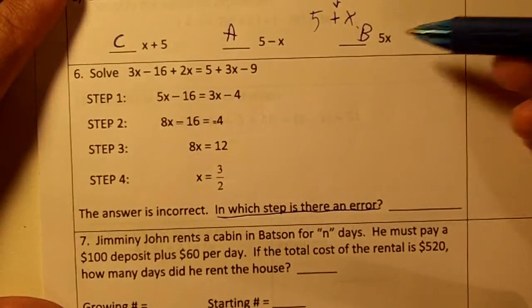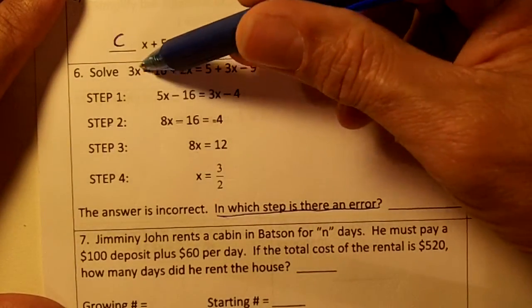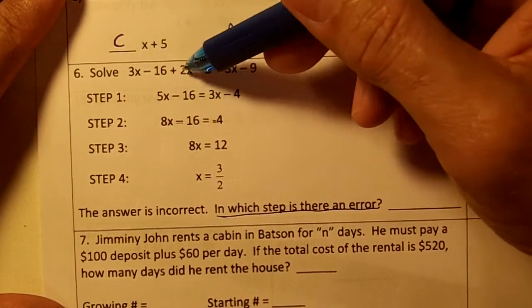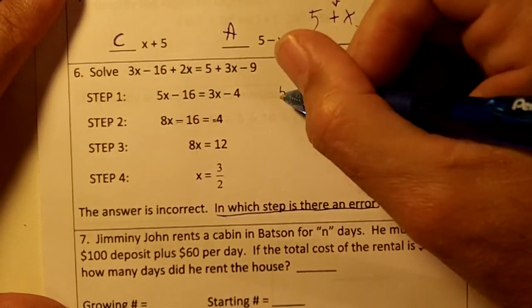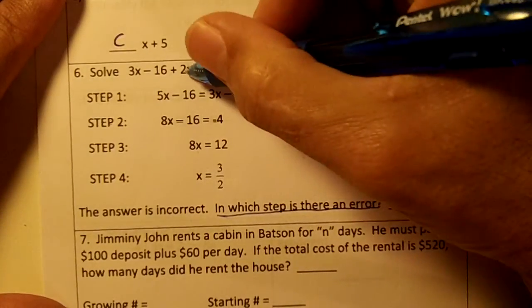To the right. The first step would be to combine our x's. 3x plus 2x would be 5x. So we combine our x's.